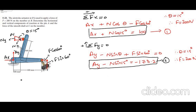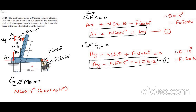Now we need one more equation. Our third equation is the sum of moments about point A equals zero, considering clockwise as positive. Since AY and AX pass through point A, they produce no moment. The horizontal component N cos 15 degrees is trying to rotate clockwise, so it is taken as positive, multiplied by its moment arm of 600 cos 15.